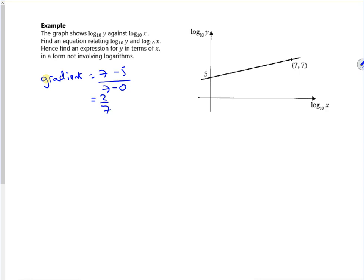So I had a graph which was log y is m log x plus c. But I know m is 2 over 7, so log y is 2 over 7 log x plus 5. Now I'm going to put it all in terms of logs.